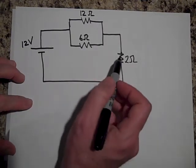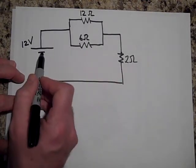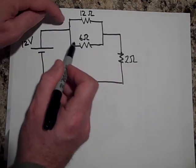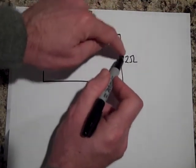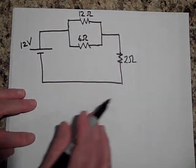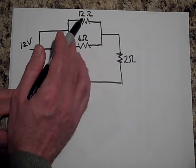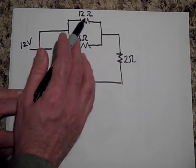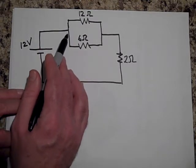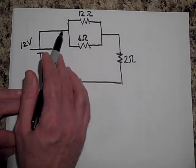Okay, so this gets the most current because the current comes along here, it splits up and then it recombines. So this is getting all the current. The one that will get the least is the 12 ohm because it's got the most resistance right here. And so you're going to get twice as much current going this way as this way.